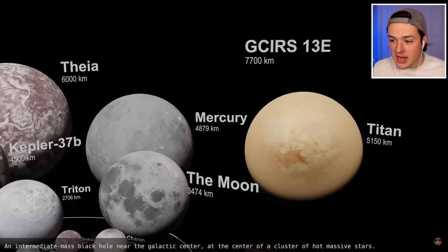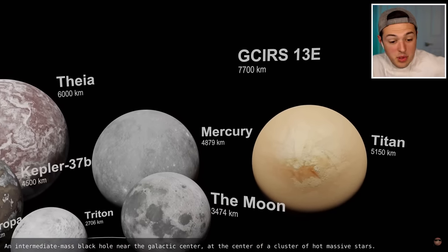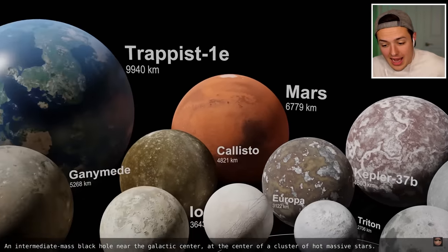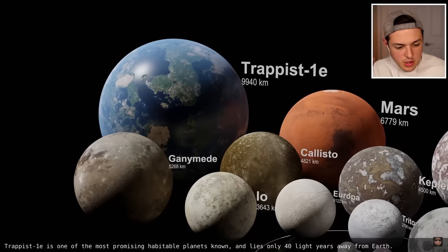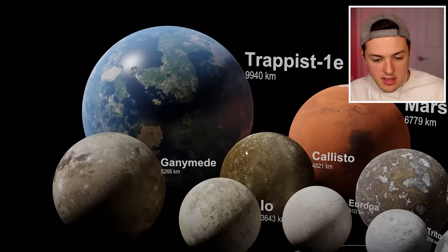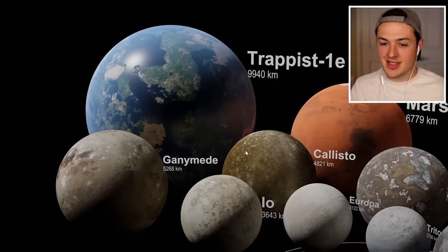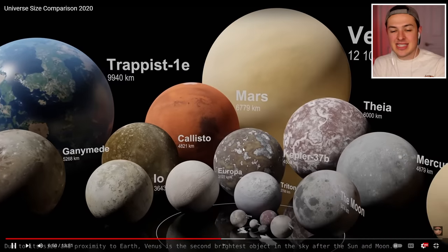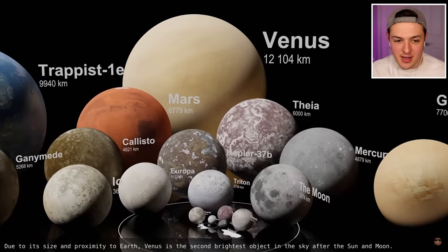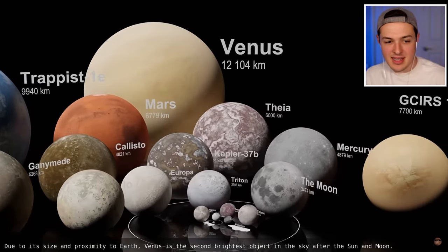At least in our solar system. There's Titan right there. The only moon to have a substantial atmosphere. So we could potentially live on it one day. If we figure out how to make it livable and terraform. A hypothetical planet that collided with Earth 4.5 billion years ago? I didn't even know about that. How did I not know about this? We've collided with another planet. What is that? A black hole near the galactic center. What is this? Trappist-1e. The most promising habitable planets known. And it's only 40 light years away from Earth.